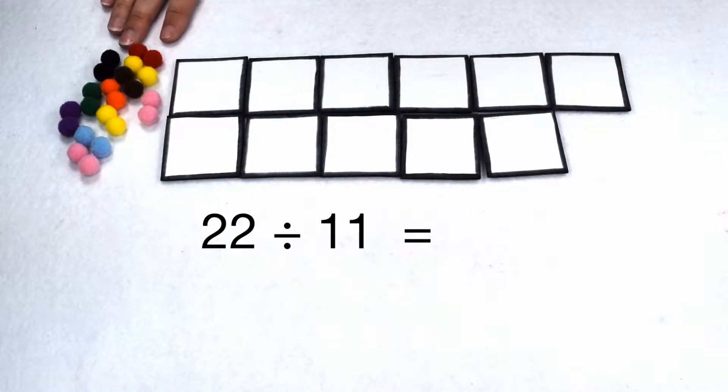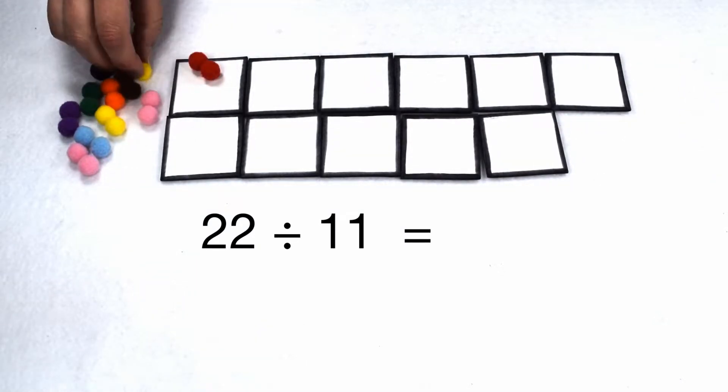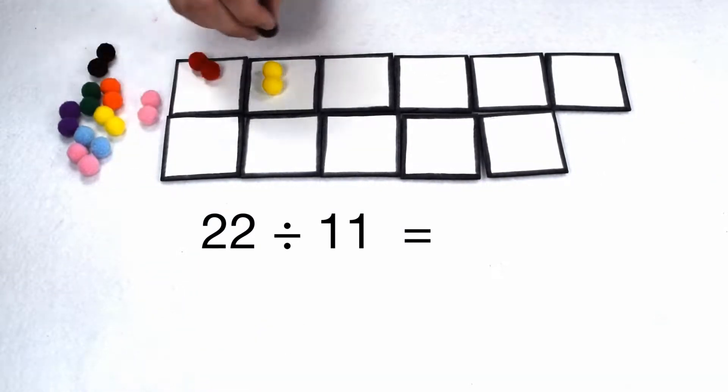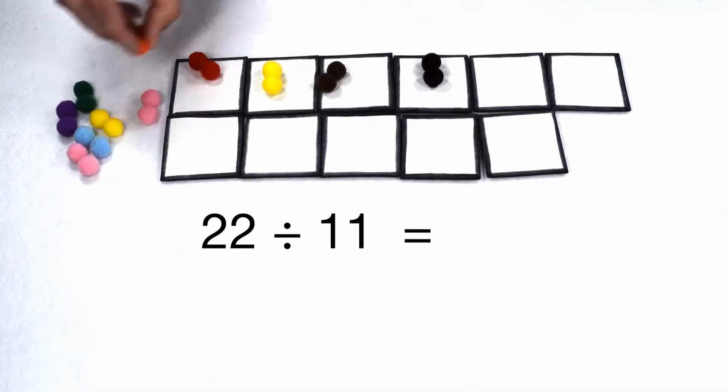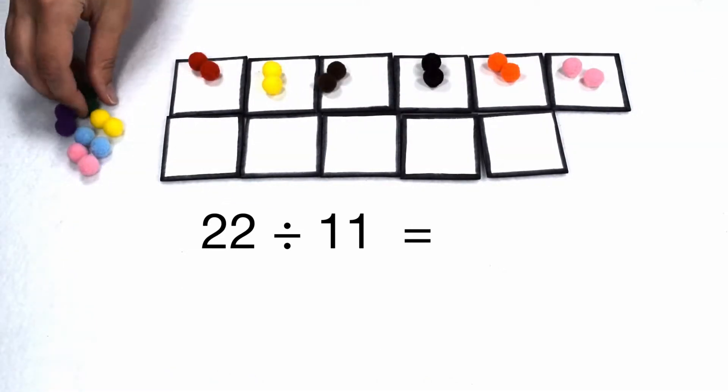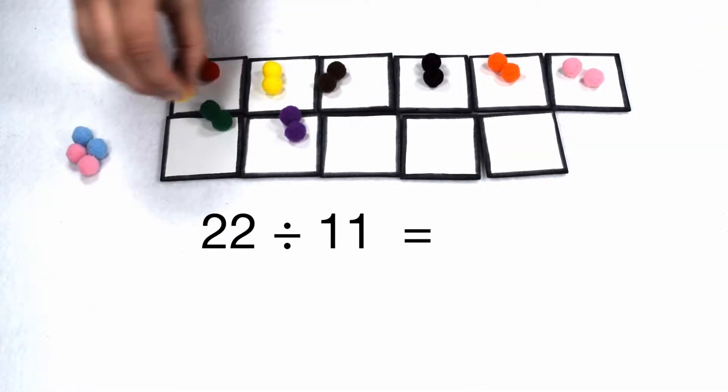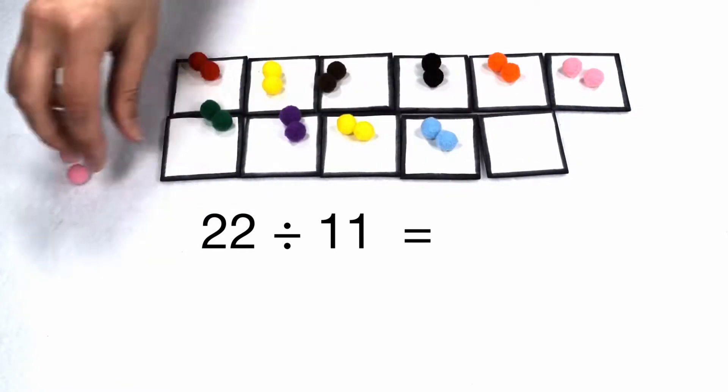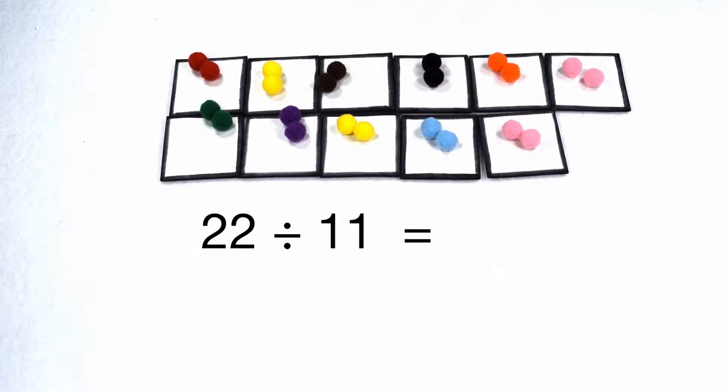Here we have a dividend of 22 items that I wanted to divide into my divisor of 11 groups. If 22 is divisible by 11, then I should be able to put the same number of items in each group without having any remainders. As we go through, we can see that if I have 22 items split into 11 groups, I have two items in each group. So 22 is divisible by 11.